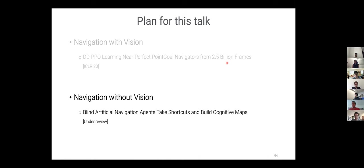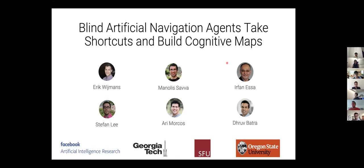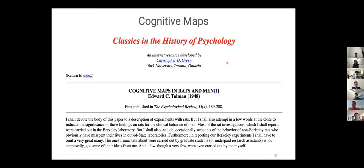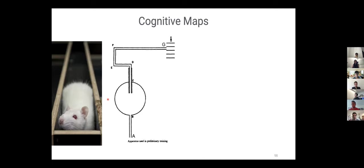All right. So the next thing I want to dive into is a piece of work we've just concluded, also led by Eric Wijmans. Here we wanted to test the cognitive map hypothesis. It's this idea that brains of organisms build internal spatial representations of the environment. I highly encourage you to read this paper. This entire line of inquiry started from Edward Tolman's paper, cognitive maps in rats and men.